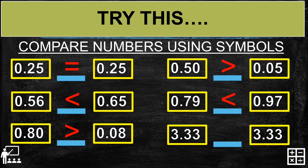And last, 3 and 33 hundredths and also 3 and 33 hundredths are the same numbers, so we are going to use the equal to symbol.